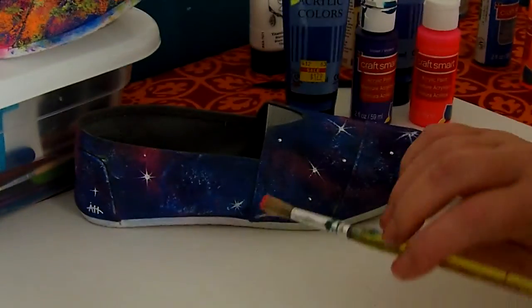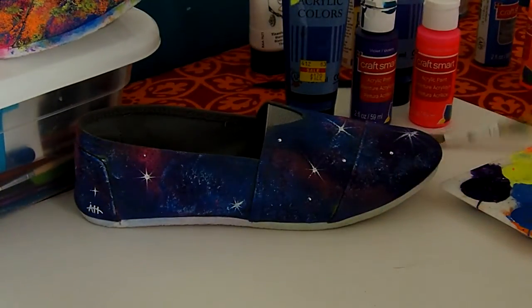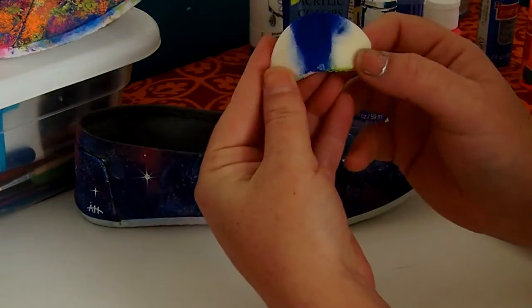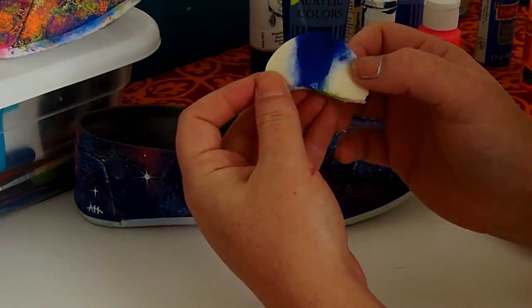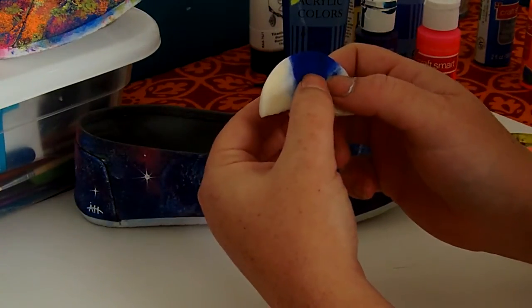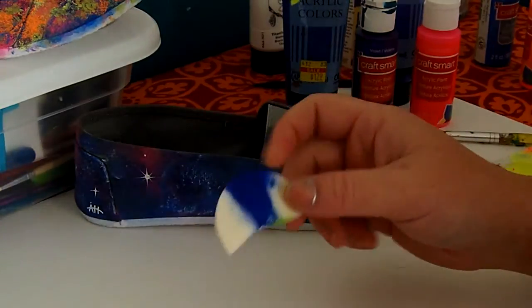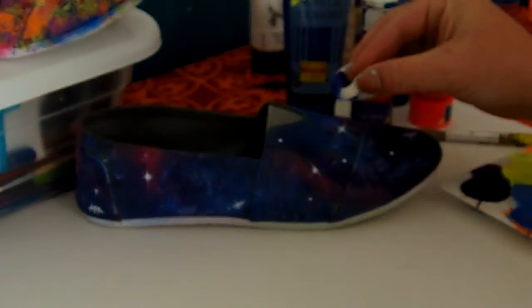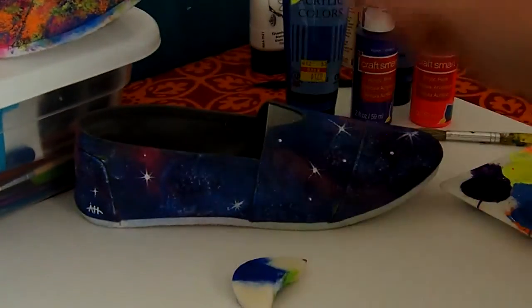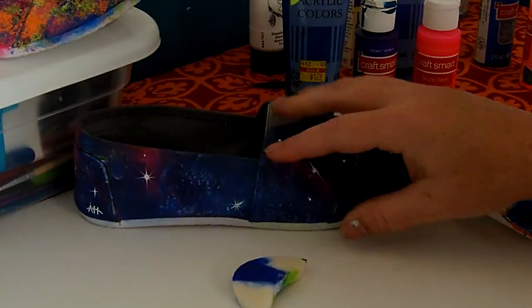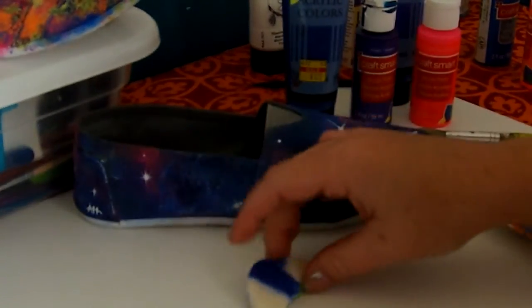Instead of the brush on this one, which I think you can get the same effect, I like the effect of the sponge better. These are just round cosmetic sponges. I like the softness and the pattern it gave me. What I did is just started with each color and just went all over, did like a pouncing motion.